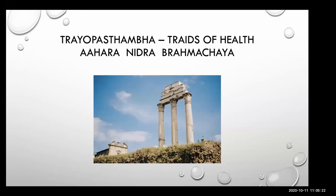Brahmacharya is many times translated as celibacy, but it is not just celibacy — it is the proper use of the indriyas. Ayurveda does not recommend everyone to be a celibate. According to the ashrama that we are in, we have to follow the rules or regimen of that ashrama. Among the three pillars of health, ahara and nidra are most important, showing the importance of food and lifestyle.